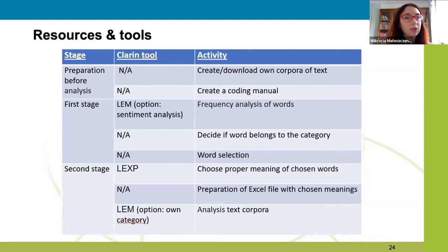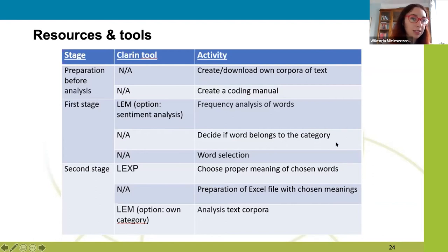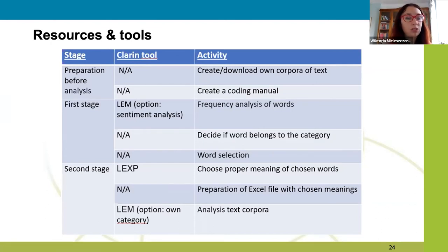The CLARIN tools applied include the Literary Exploration Machine with two options: sentiment analysis and own category. Students do frequency analysis of text and search for words for their own category. Another tool used is LexP, where students can recognize all the meanings of chosen words and pick the one which matches the definition.